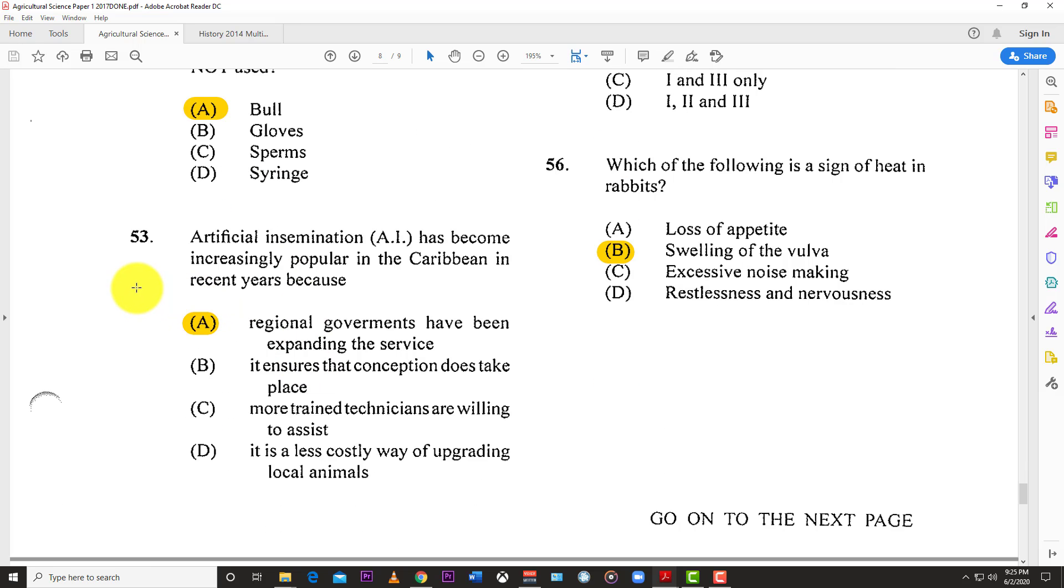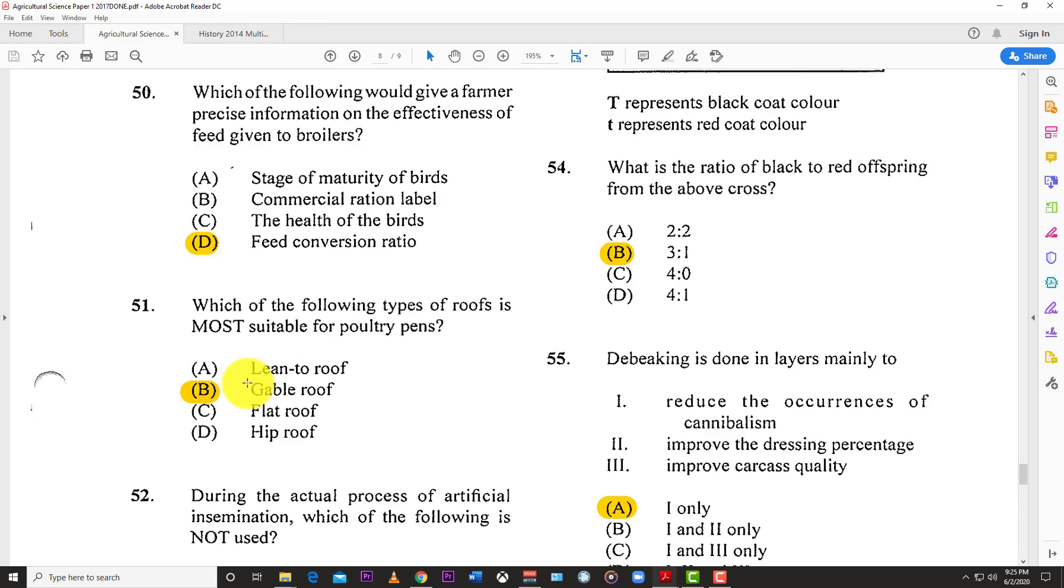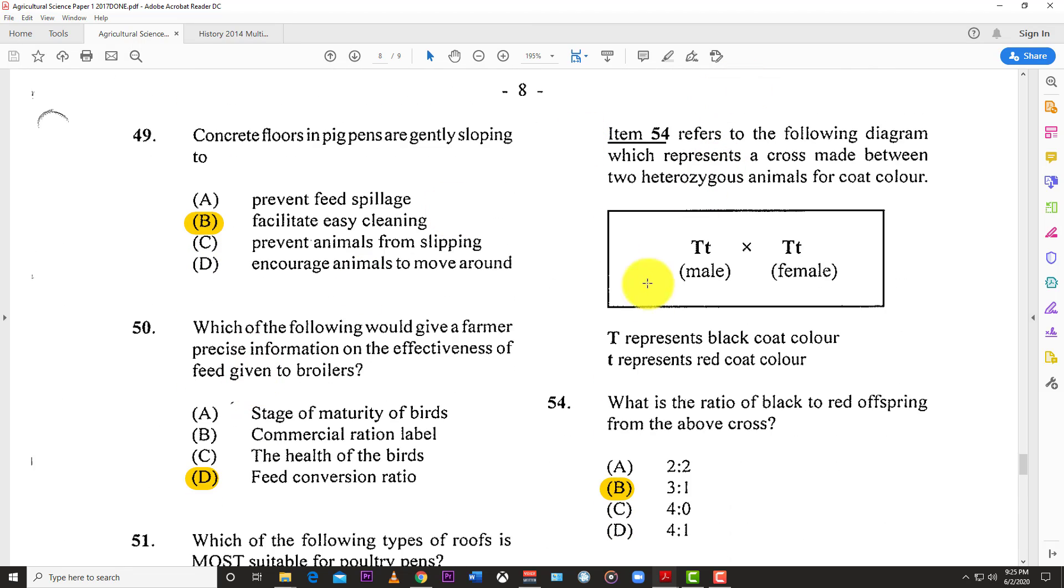Number fifty-one: Which type of roof is most suitable for poultry pens? The answer is the gable roof. Number fifty-two: During the actual process of artificial insemination, which of the following is not used? The answer is A, the bull. The glove, pipette, and syringe are all used, so the bull is the best answer.